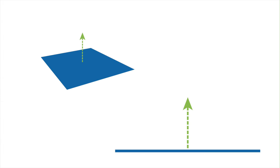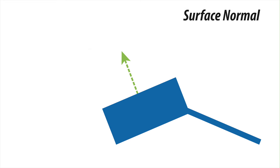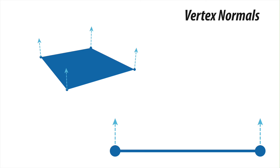A normal is a vector that's perpendicular to a surface at a given point. In 3D graphics, normals are crucial for both modeling and shading — for instance, we can move a polygon along its normal direction. There are two types of normals: vertex normals, which are associated with individual vertices of a polygon, and surface normals, which are computed by averaging the vertex normals of a polygon. Normals play a key role in computing how light interacts with a surface, determining its shading.